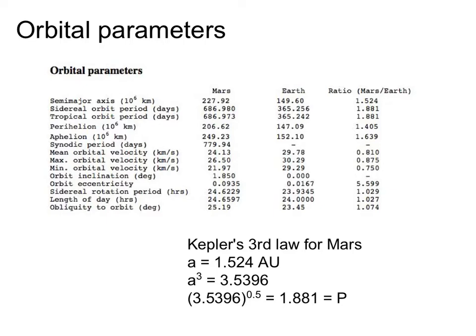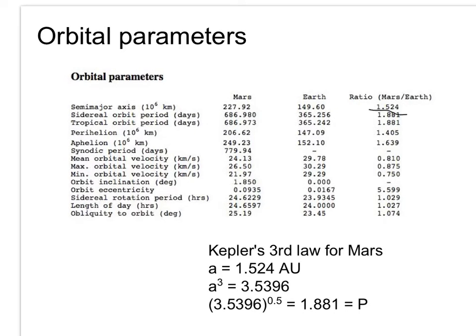So if we look at how far away Mars is from the sun in terms of Earth distances from the sun, astronomical units, and the time it takes Mars to go around the sun compared to the time it takes the Earth to go around the sun. So Mars takes 1.88 Earth years to go around the sun, and it is 1.5 Earth distances, astronomical units, further out from the sun. So if you take that 1.524, the distance, and you cube it, you get 3.5, something, something, something. And then if you take the square root of that, you come up with 1.88, which is, voila, the time it takes Mars to go around the sun.